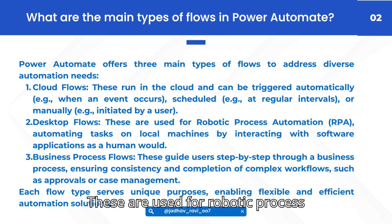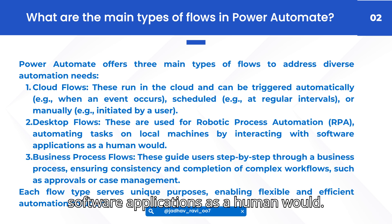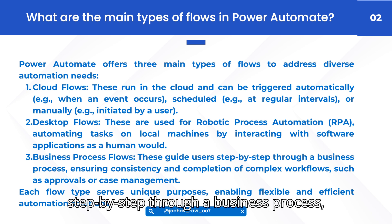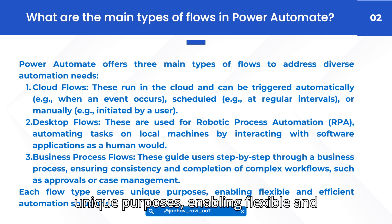Desktop flows: these are used for robotic process automation (RPA), automating tasks on local machines by interacting with software applications as a human would. Business process flows: these guide users step-by-step through a business process, ensuring consistency and completion of complex workflows such as approvals or case management. Each flow type serves unique purposes, enabling flexible and efficient automation solutions.